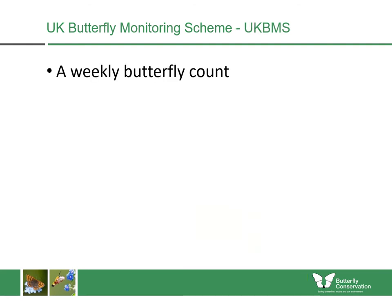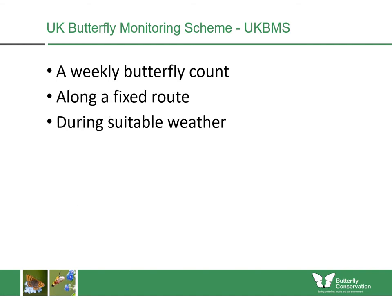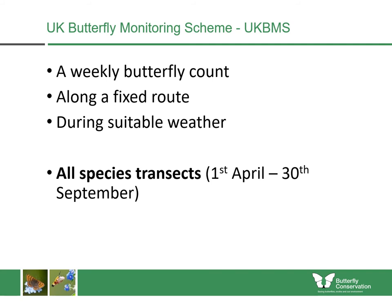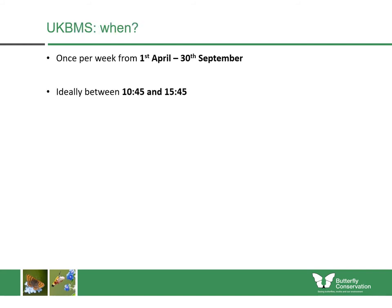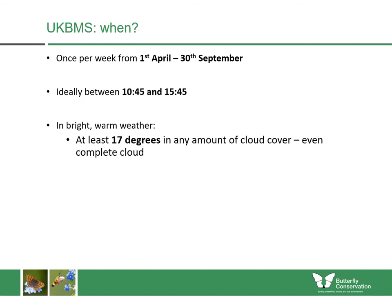The UKBMS is essentially a weekly butterfly count along a fixed route, conducted in suitable weather. It runs from the 1st of April until the 30th of September for all-species transects, but we also have single-species transects running throughout the flight period of target species only. The ideal recording time is between 10:45 and 15:45 when butterflies are most active. Weather conditions require at least 17°C in any amount of cloud cover, or at least 13°C if it's at least 60% sunny. It should also be dry and not windy.